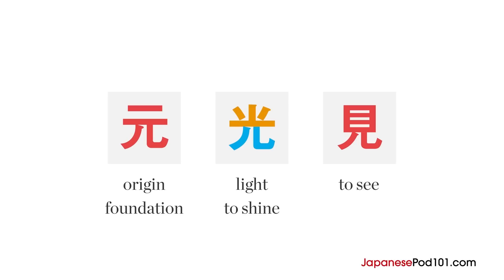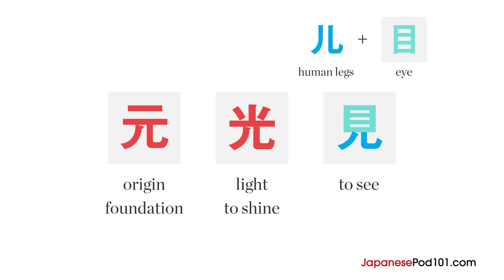The final kanji has human legs on the bottom, supporting the character for eye. An eye that is mobile is one that can see. So this kanji character means to see.